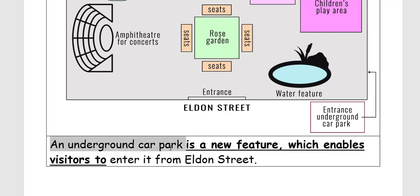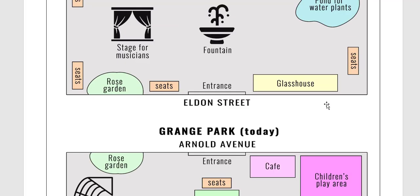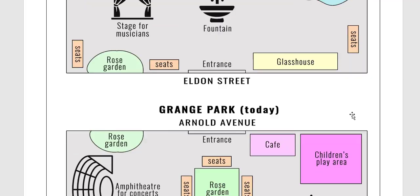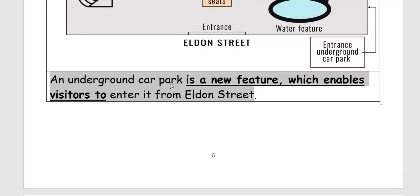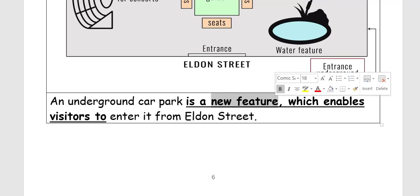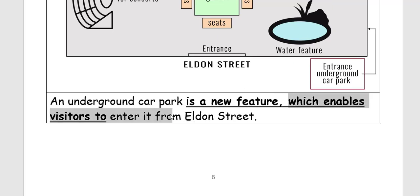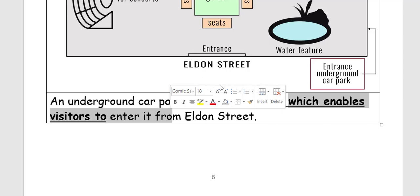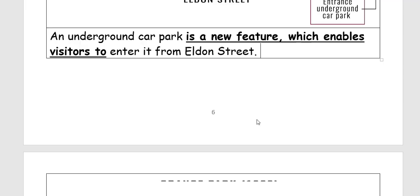An underground car park is a new feature which enables visitors to enter it from Eldon Street. This feature did not exist before, so it is described as new.